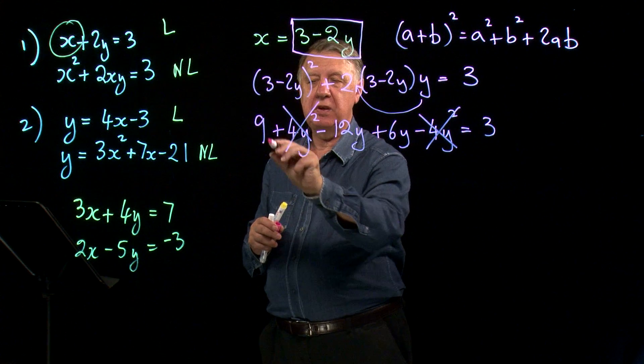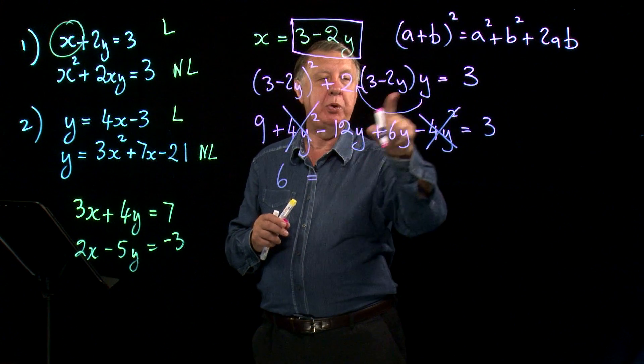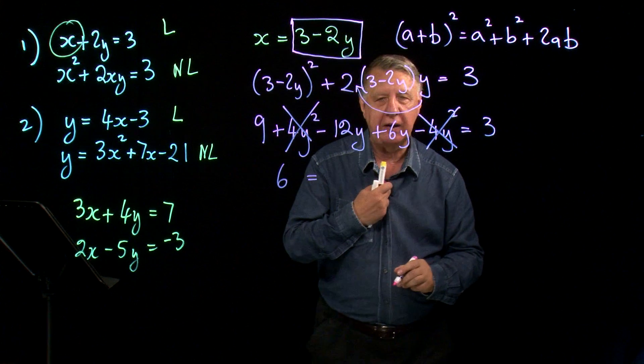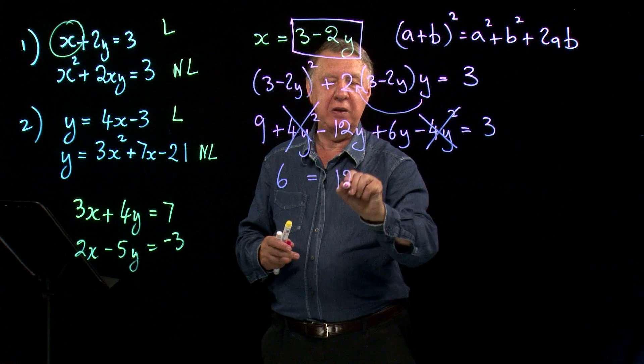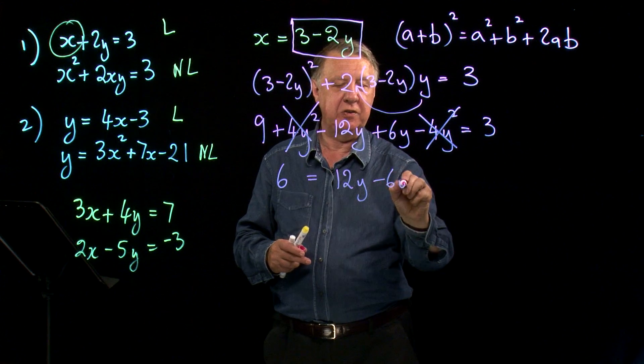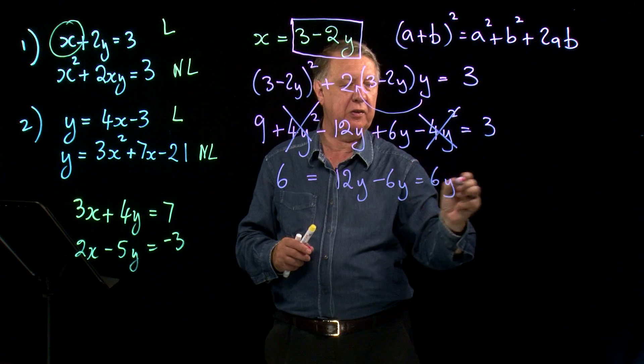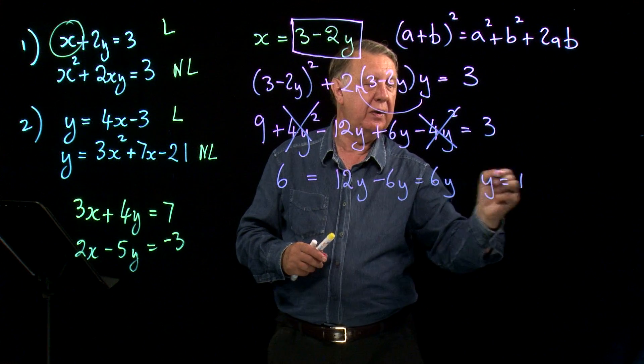3 will take 3 from this side, so 9 take away 3 is 6. And then if I put the y terms on the right-hand side, negative 12y becomes plus 12y, plus 6y becomes minus 6y, so I get 6y. 6 equals 6y, y equals 1.